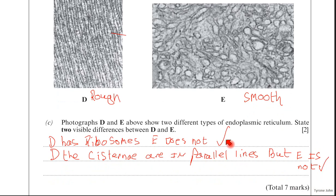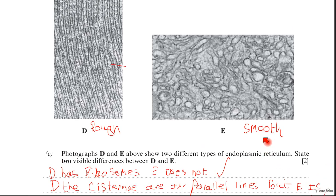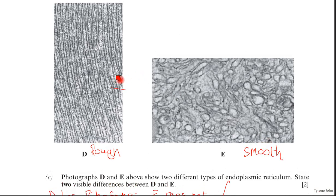You could have put, instead of saying but E is not, you could have said E is less organized. It looks generally, it looks a little bit more messy if you like, compared to the rough endoplasmic reticulum.